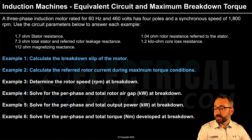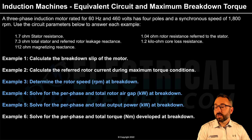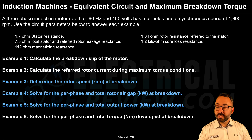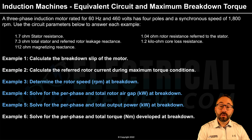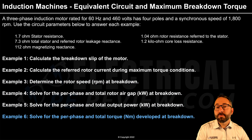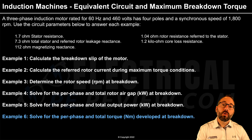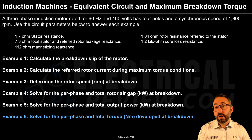In Part 1 of this video we're going to answer Examples 1 and 2. Example 1: calculate the breakdown slip of the motor. Example 2: calculate the referred rotor current during maximum torque conditions. In Part 2 we're going to answer Examples 3, 4, and 5 — rotor speed at breakdown, per-phase and total rotor air gap kilowatts at breakdown, and total output power at breakdown. In Part 3 we answer Example 6: per-phase and total torque in newton-meters at breakdown, using all four torque formulas in the reference handbook.